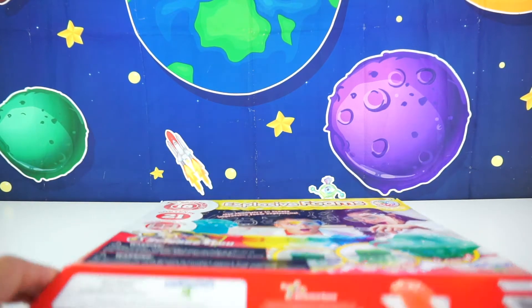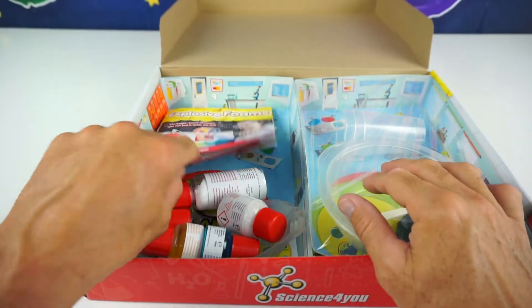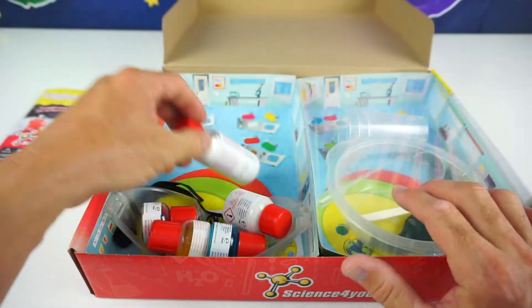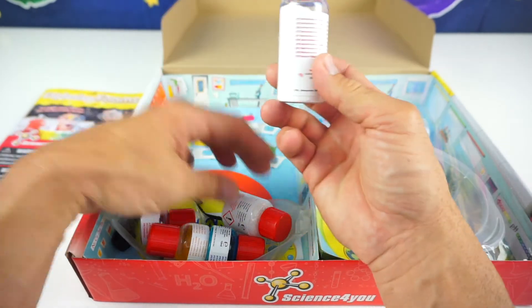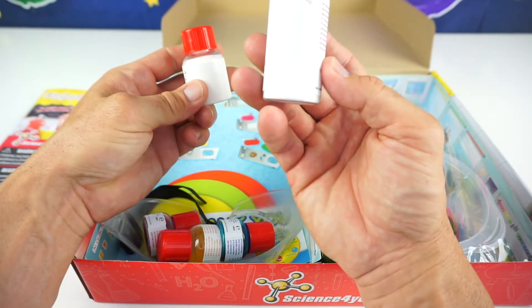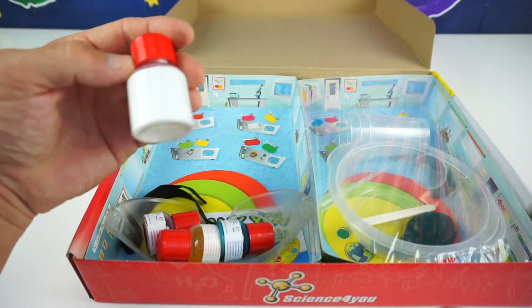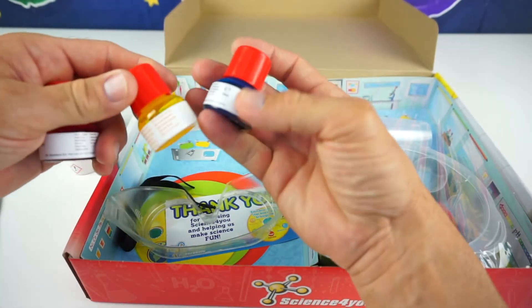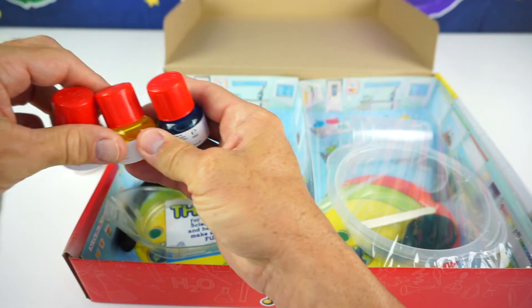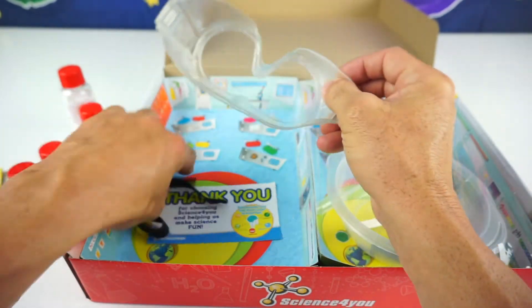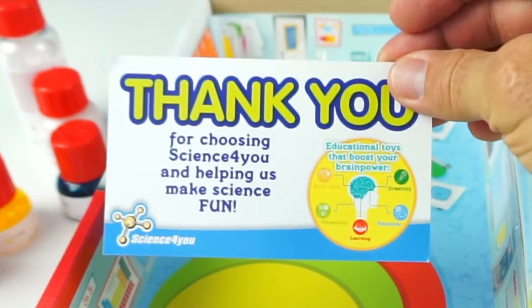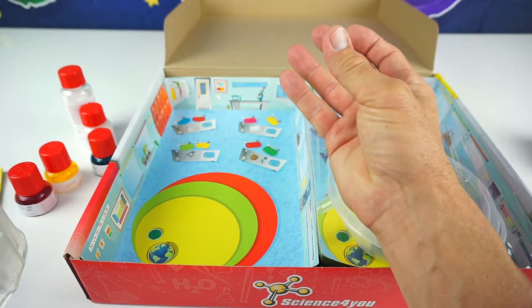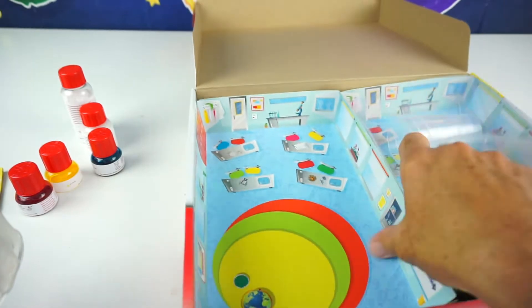Alright, so let's open it up. Okay, so here we have our educational book right here. We're going to take a look at that in one minute. Here's our sodium bicarbonate, which is baking soda right here. This is citric acid in here. Here are your three colorings, blue, yellow, and red. Our goggles and a strap. And a thank you for choosing science for you and helping us make science fun. Alright, let's take the rest out.